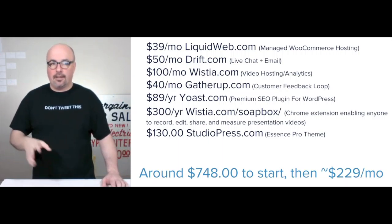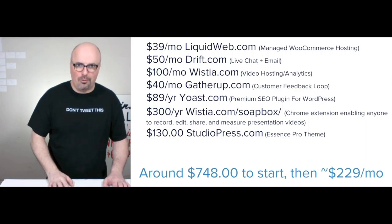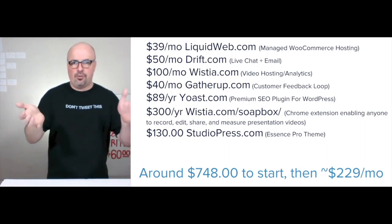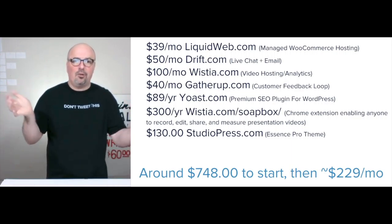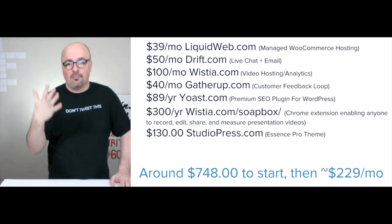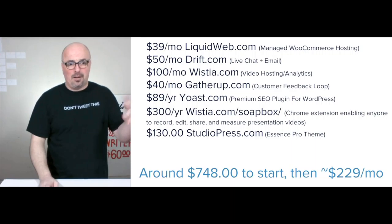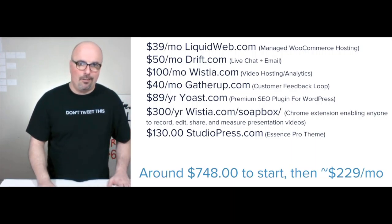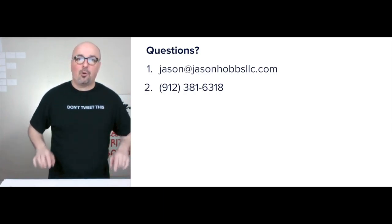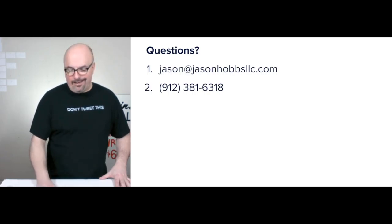Wistia for video hosting and analytics is $100 a month. GatherUp for the customer feedback loop is $40 a month. Yoast.com premium SEO plugin for WordPress is $90 a year. Wistia Soapbox for recording presentations is $300 a year — you use your screen and camera and it puts the two together. StudioPress.com Essence Pro theme is $130 if you've never bought from them before. Total: approximately $748 upfront and $229 a month. For questions, reach Jason at jason@jasonopsllc.com or call or text 912-381-6318.